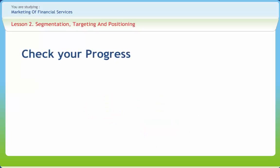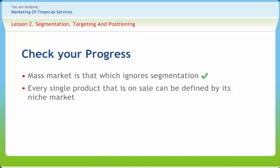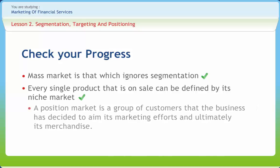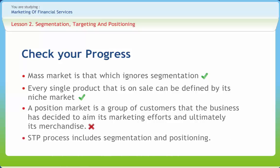Now let us check if you have understood the various concepts discussed in this lesson. Mass market is that which ignores segmentation — right or wrong? Right. Every single product that is on sale can be defined by its niche market — right or wrong? Right. A position market is a group of customers that the business has decided to aim its marketing efforts and ultimately its merchandise — right or wrong? Wrong. STP process includes segmentation and positioning — right or wrong? Wrong.